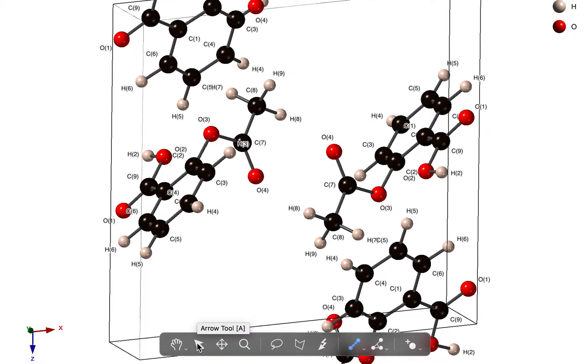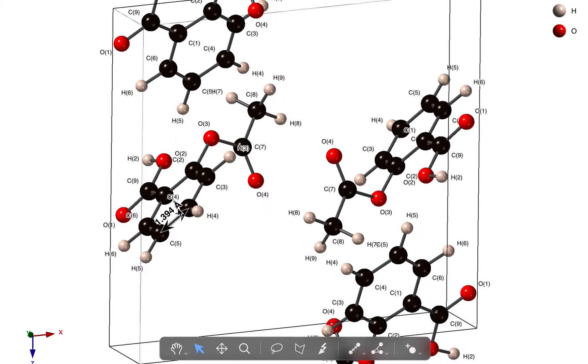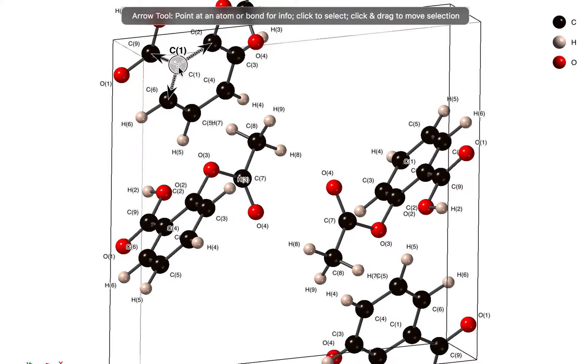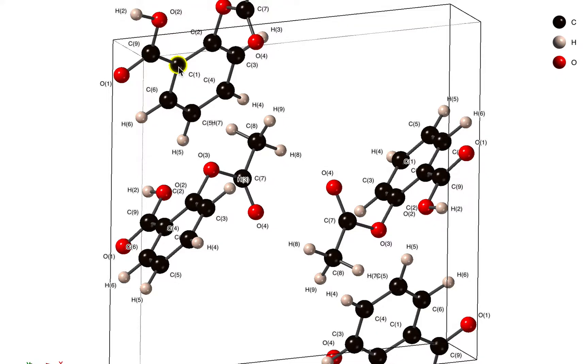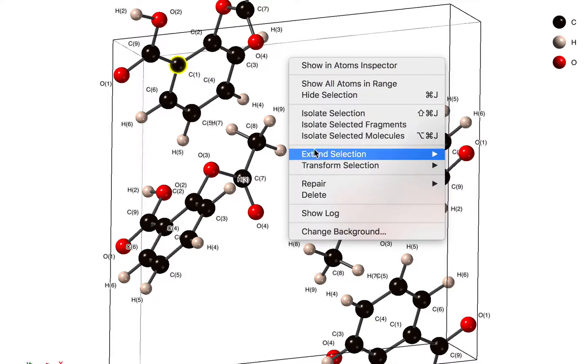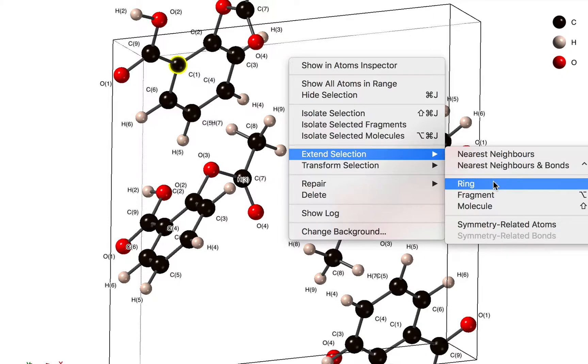So there's an easy way of doing that in CrystalMaker. We're going to switch to the arrow tool and I'm going to select one atom in the ring. I can shift click on the other atoms to select them, or as a shortcut we can right click and we can extend the selection to the entire ring.